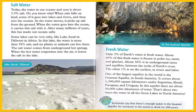Fresh Water. Only 3% of Earth's water is fresh water. About 69% of this fresh water is frozen in polar ice, snow, and glaciers. About 30% is in underground caves and aquifers, between the rocks of Earth's crust. The other 1% is on the surface, in rivers and lakes.